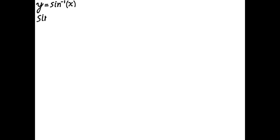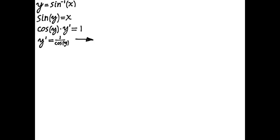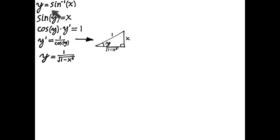Remember when you learned how to find the derivative of the inverse trig functions? We did it by inverting the equation and using implicit differentiation. Then we got an answer in terms of y and used a triangle to rewrite it back in terms of x. The amazing result was that when you took this transcendental function and differentiated it, you got this algebraic expression.